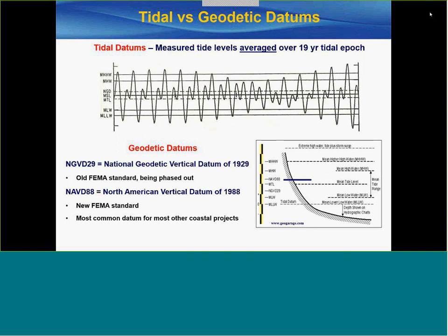Let's talk briefly about tides. The picture at the top is a snapshot of about two weeks of tidal variation. We're more interested in average tide levels — so-called tidal datums. The idea is that we take a certain tidal characteristic and average it over a 19-year tidal epoch, which is the longest length of time where the sun, moon, and earth revolve to create the tides. For example, MLLW — mean lower low water — is the average of the lowest daily low tides for 19 years.